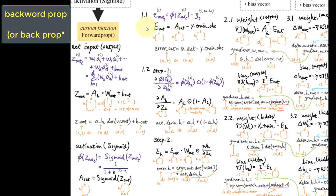In matrix notation, the output layer error propagation is a matrix that has dimension n by t. For the output layer, the number of columns is the number of output units t — t equals 2 in this case. It is calculated by differencing the activated value of the output layer, which has the same dimension, by the training set y after one-hot encoding. The Python implementation is straightforward: you simply subtract the activated value of the output layer by the y training set.